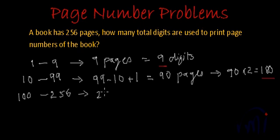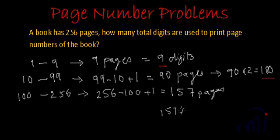There will be 256 minus 100 plus 1, that is 157 pages, and each requires three digits to print. That means the total number of digits required will be 157 multiplied by 3.